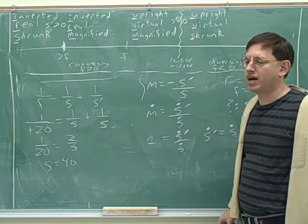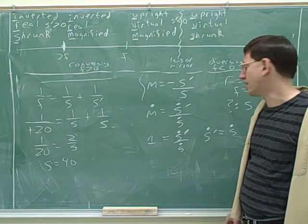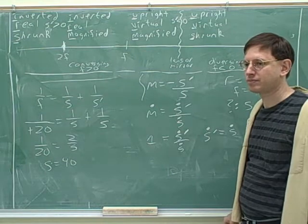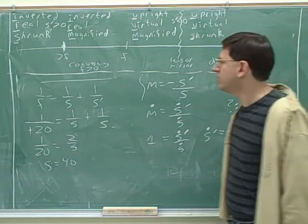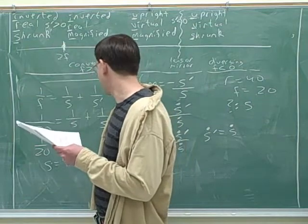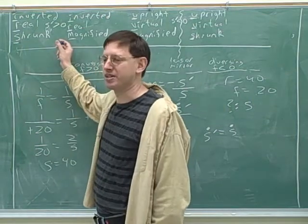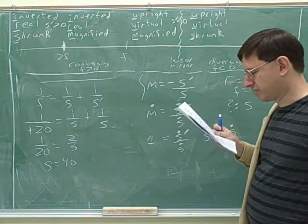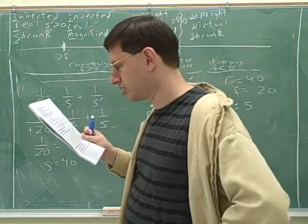So if they tell you that something is, if an image is the same size as the object, you know that the image must be at the same distance as the object. That's what we ended up with, right? We know that the object was at 40 centimeters and the, oh, well we didn't actually figure that out. But the image would also be here at 40 centimeters.